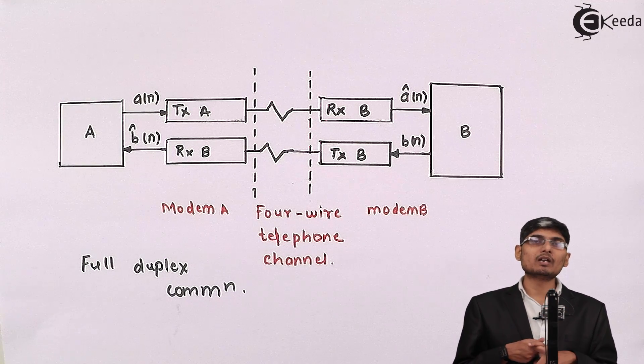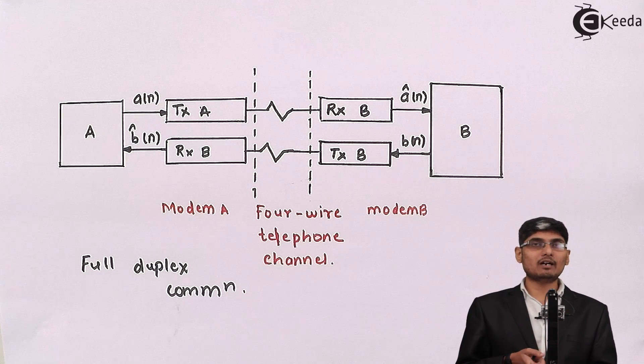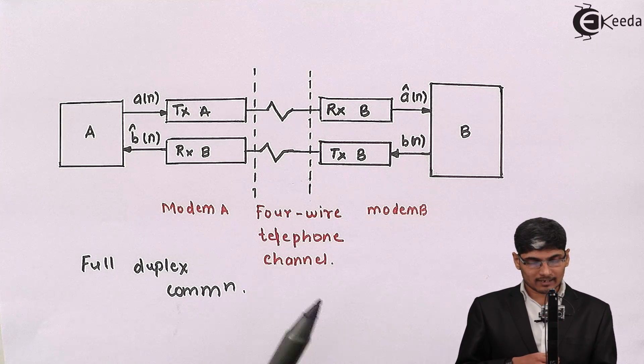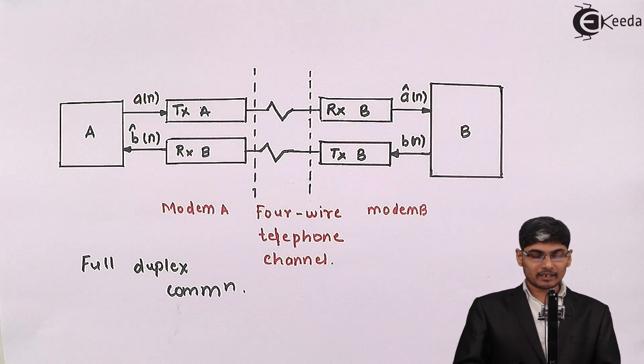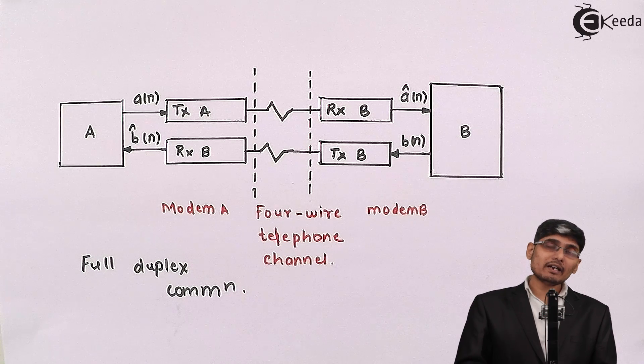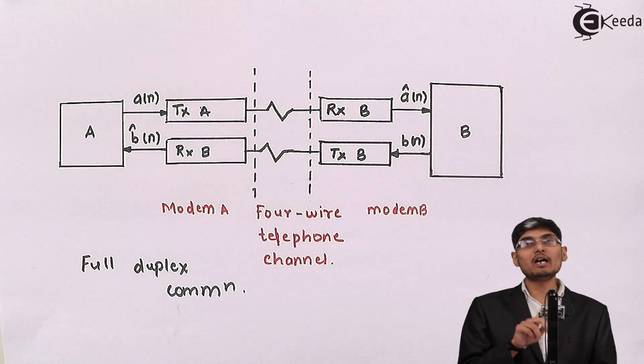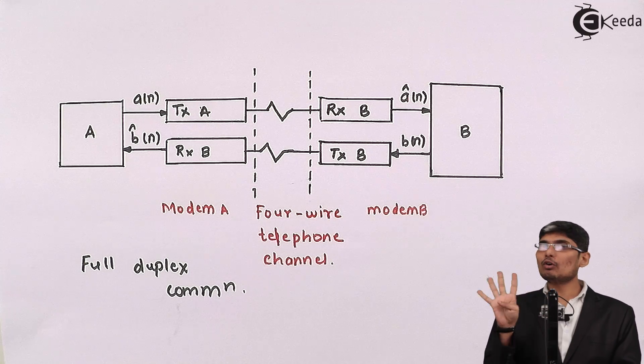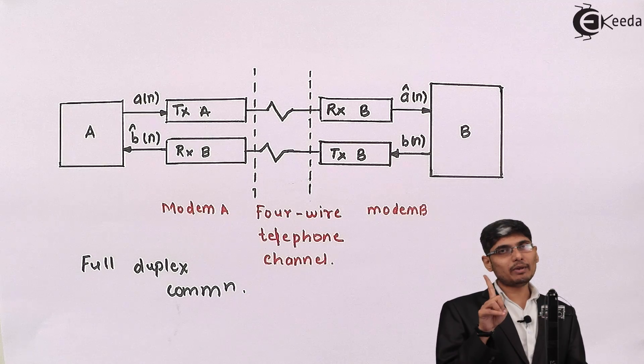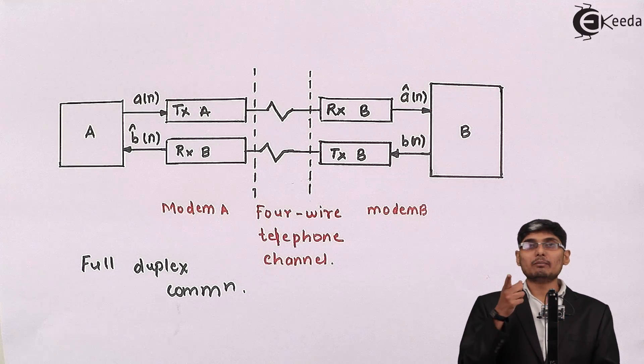The data which is taken to the telephone office or in between the telephone offices is called the trunk lines, and basically these trunk lines are four-wire lines. What is this four-wire telephone channel? We are dedicatedly giving one pair of wires for transmission side and one pair of wires for reception side.